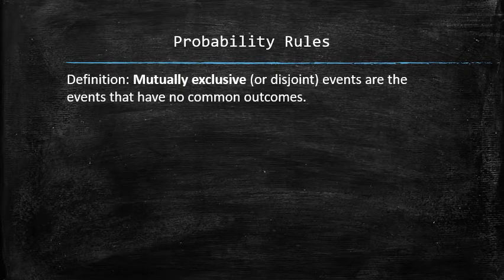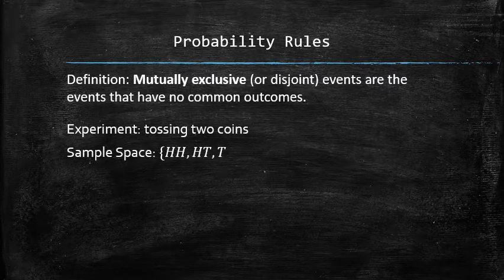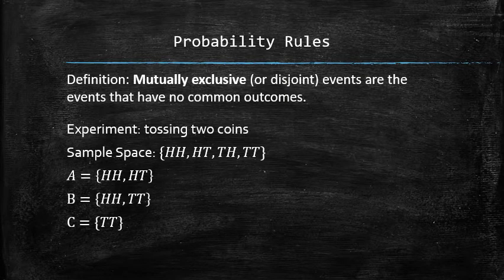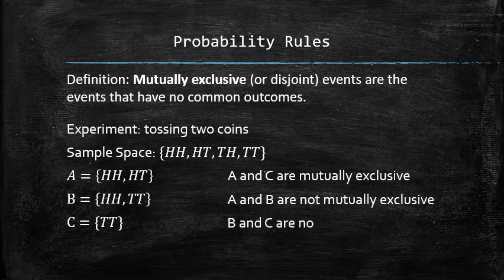Here is another example. In the experiment of tossing two coins, let A be the event {HH, HT}, B be the event {HH, TT}, and C be the event {TT}. A and C are mutually exclusive because they have no common outcomes. The same cannot be said about events A and B, or B and C, because they share at least one common outcome.